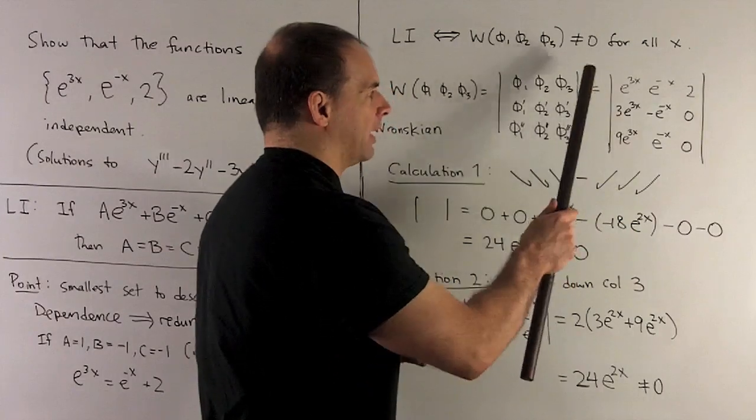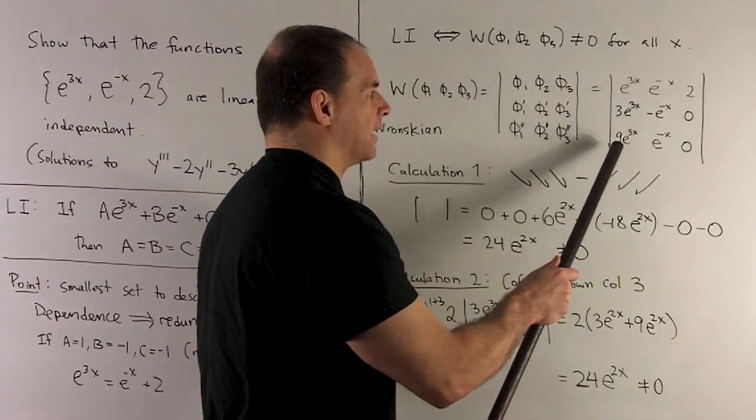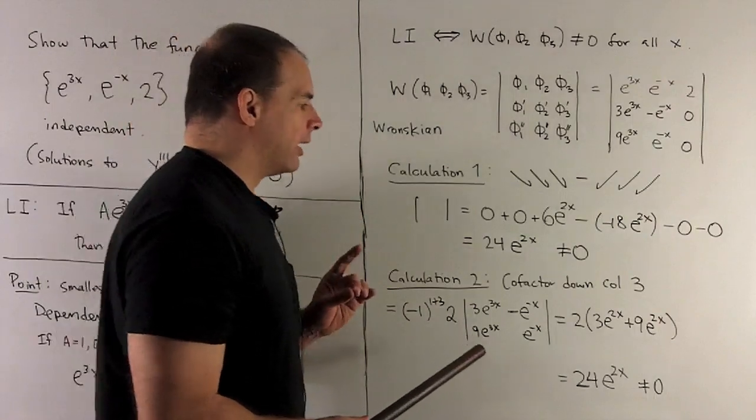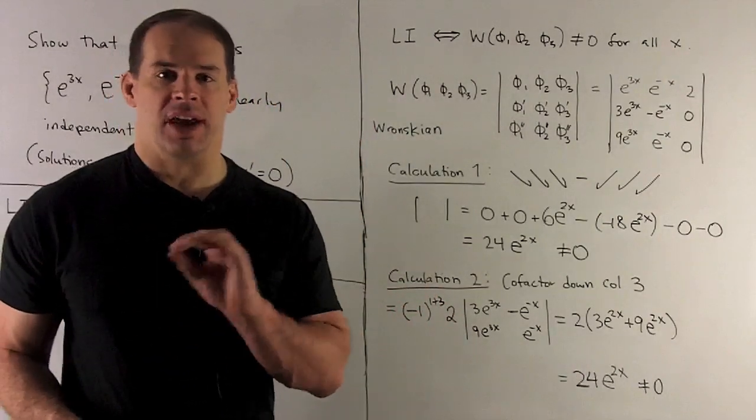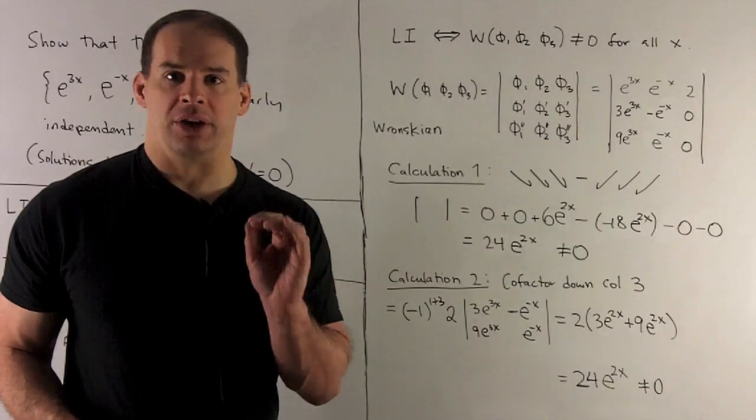So it's just going to be multiplying down this diagonal, subtract off that diagonal. When we do that, we wind up with our 24e^(2x). And again, that's never going to be equal to zero, so we get linear independence.